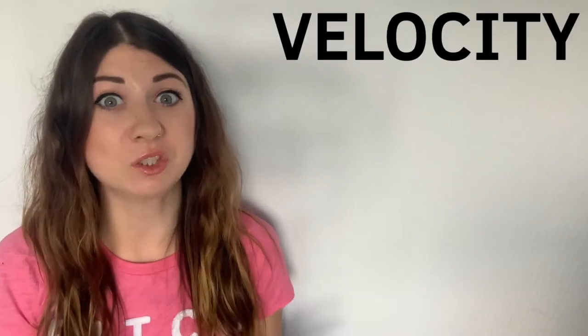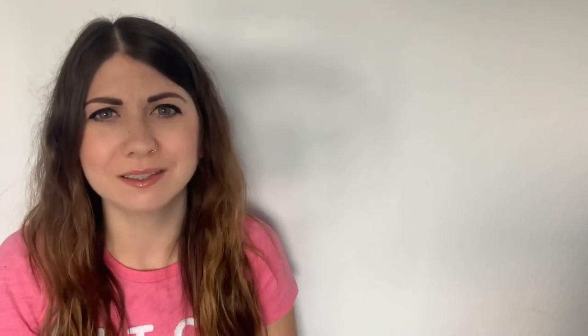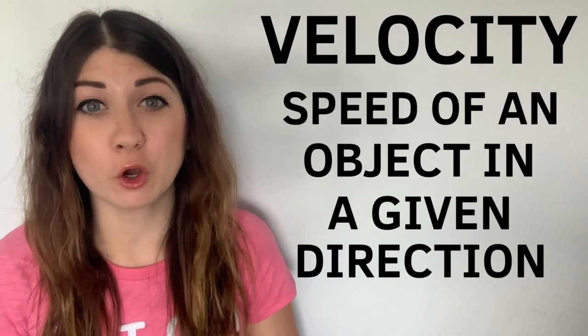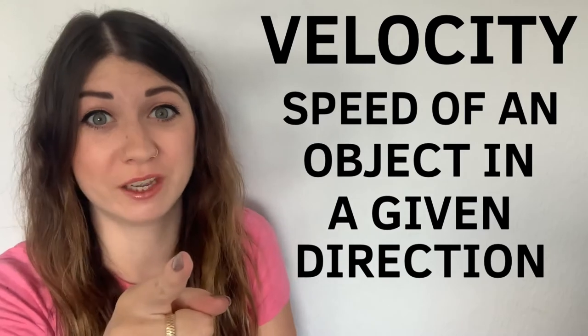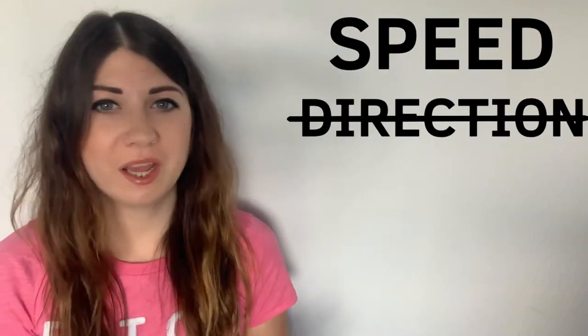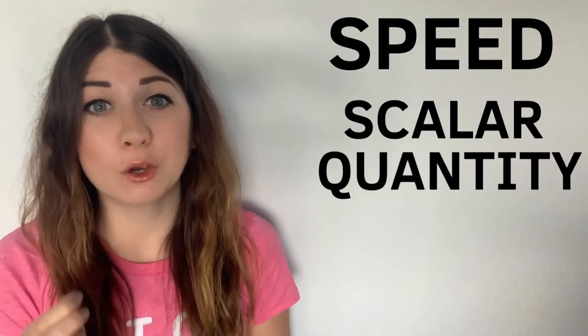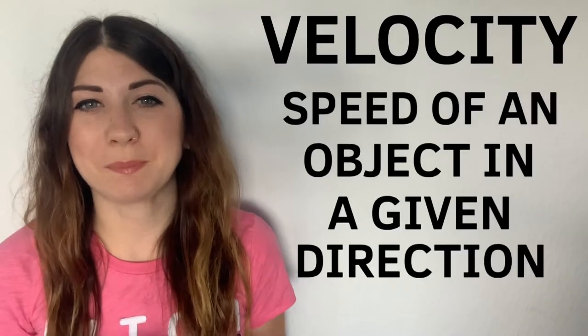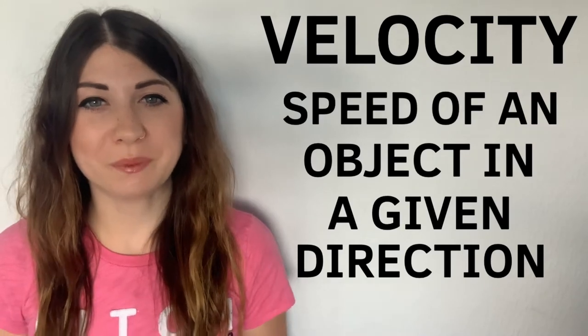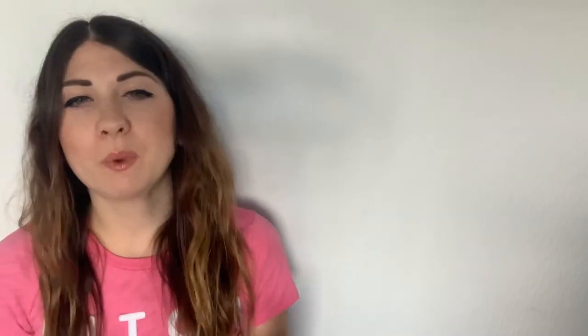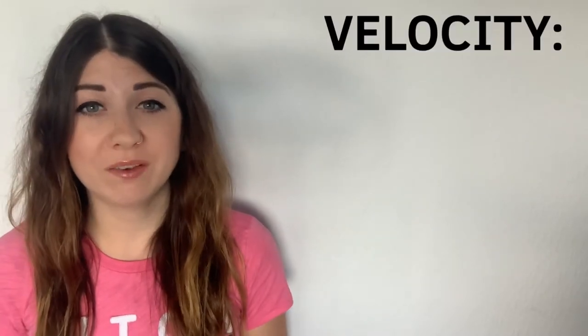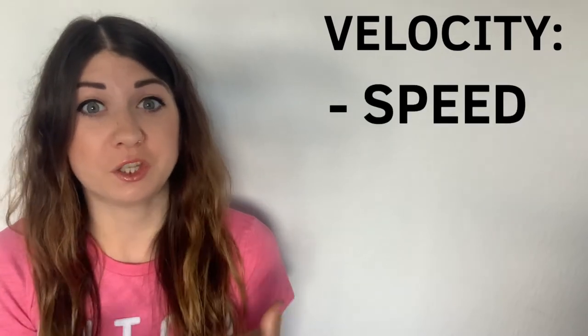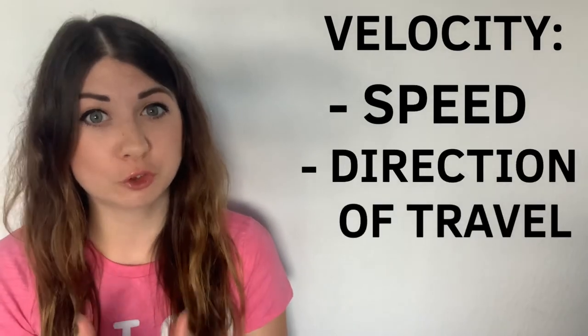You may have noticed I'm using the term velocity instead of speed and this is absolutely correct. Velocity is the speed of an object in a given direction. Speed doesn't have a direction, it's a scalar quantity so only gives the magnitude, whereas velocity is speed in a given direction so it's a vector quantity. When you specify the velocity you have to give both the magnitude, so the speed, and the direction of travel.